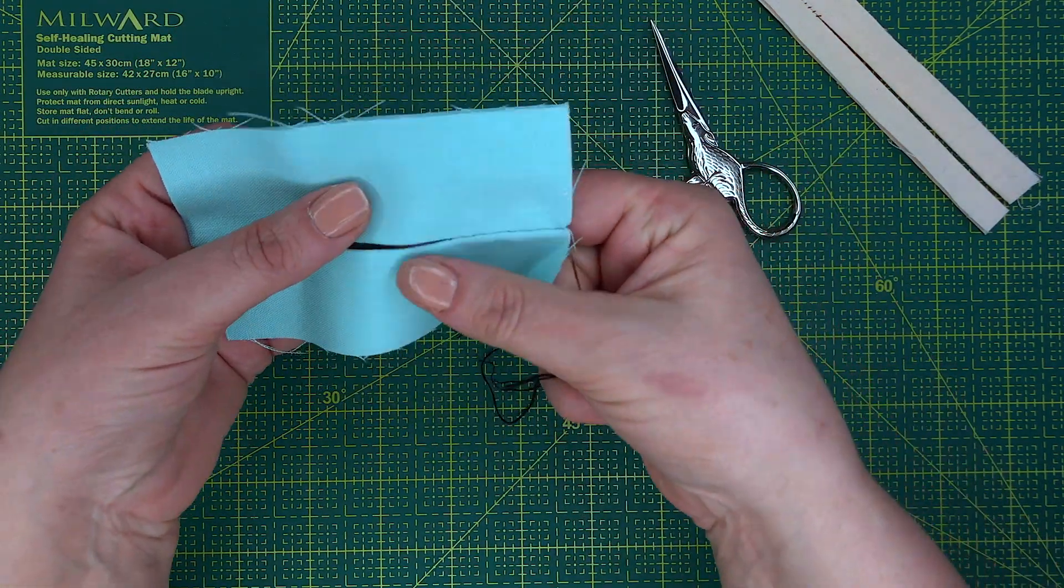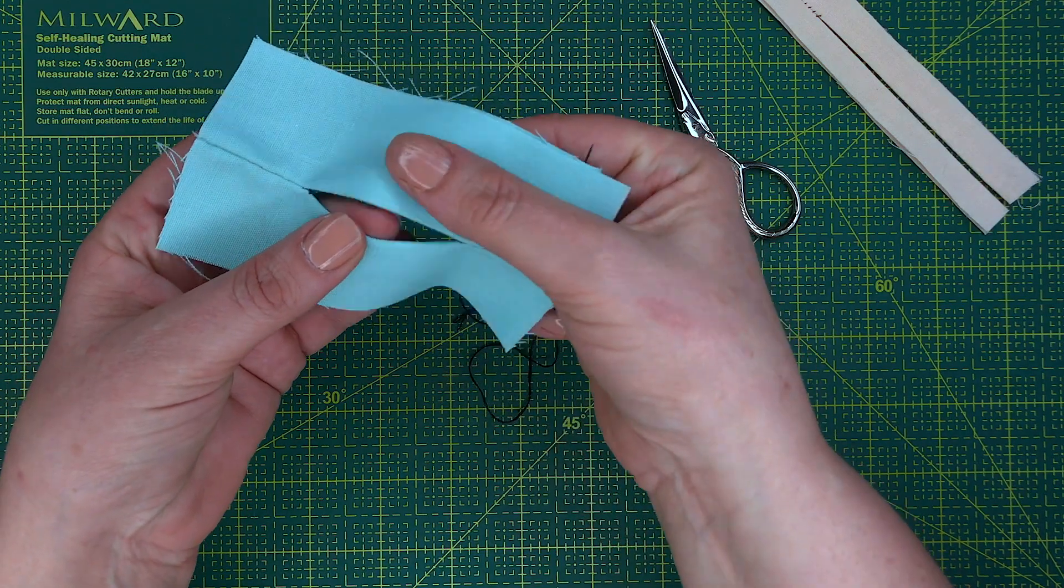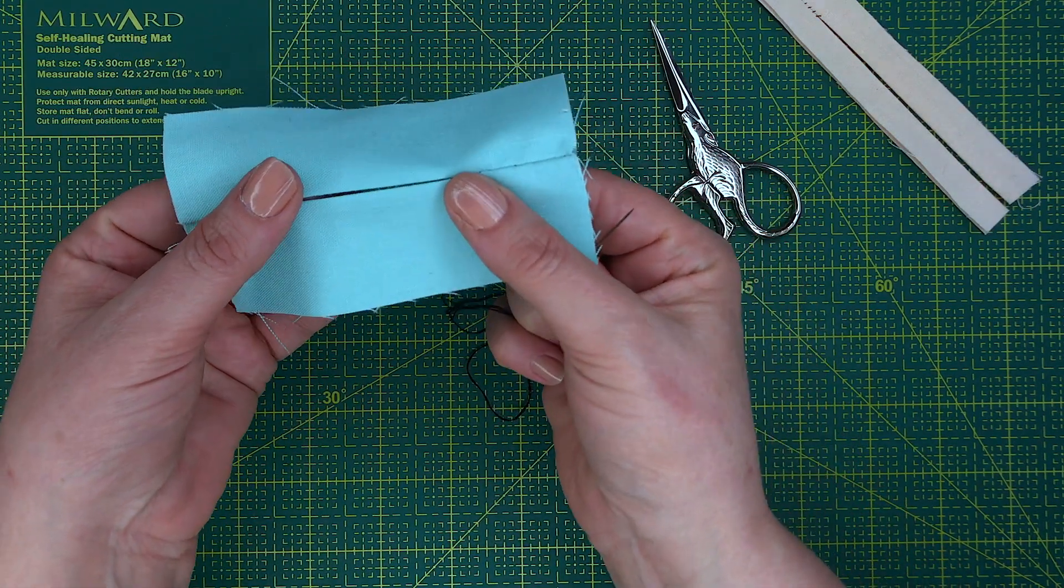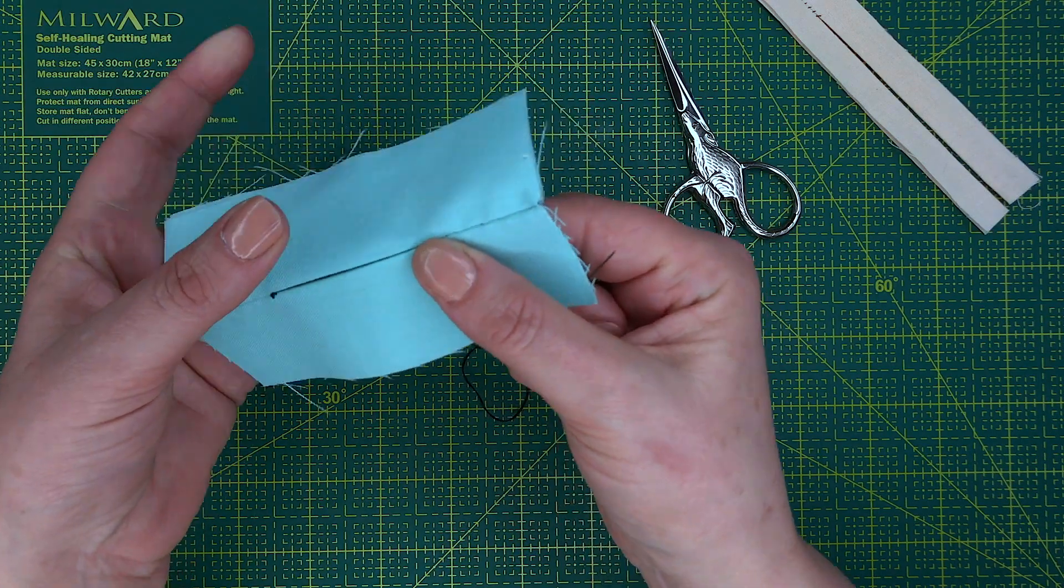So you've finished the entire softie and it's all stitched, and this is the section that you're left with. What you want to do is close this to finish off your softie.